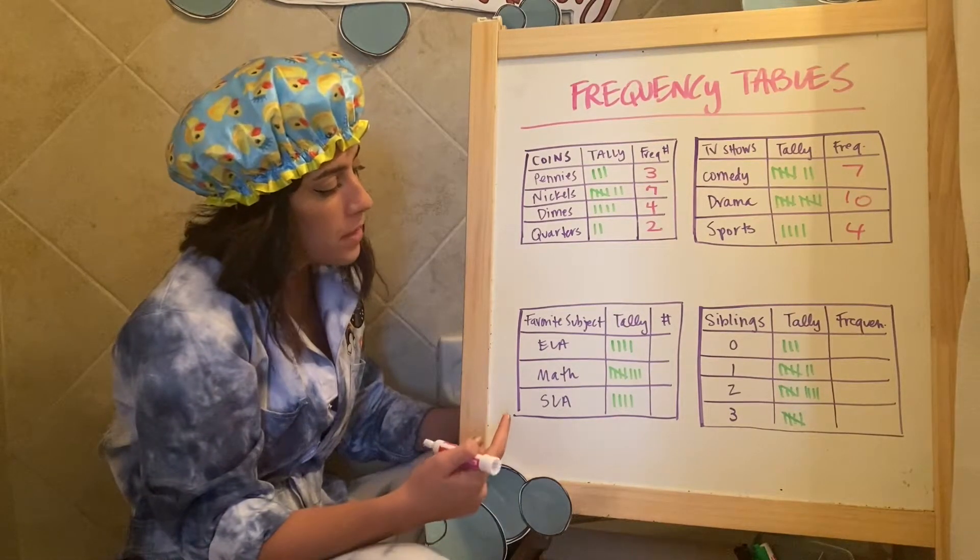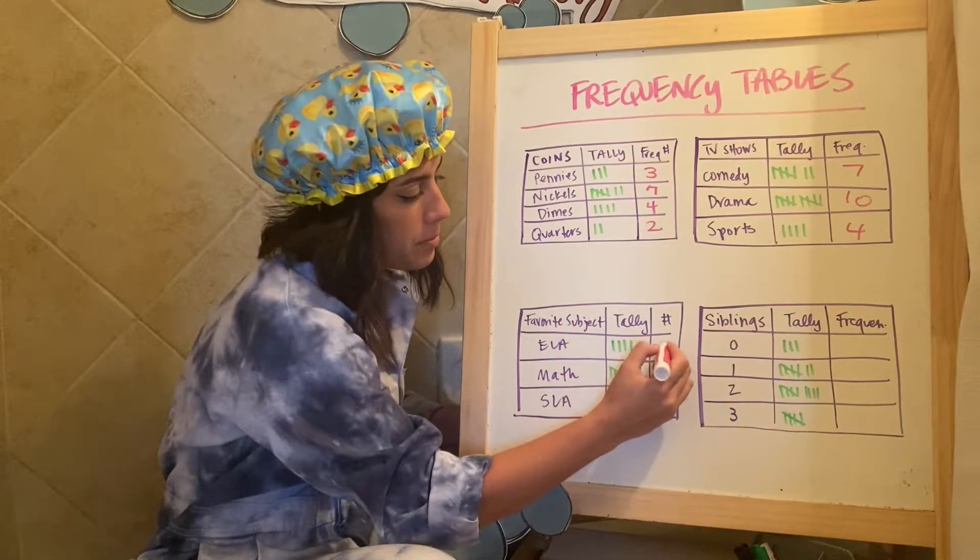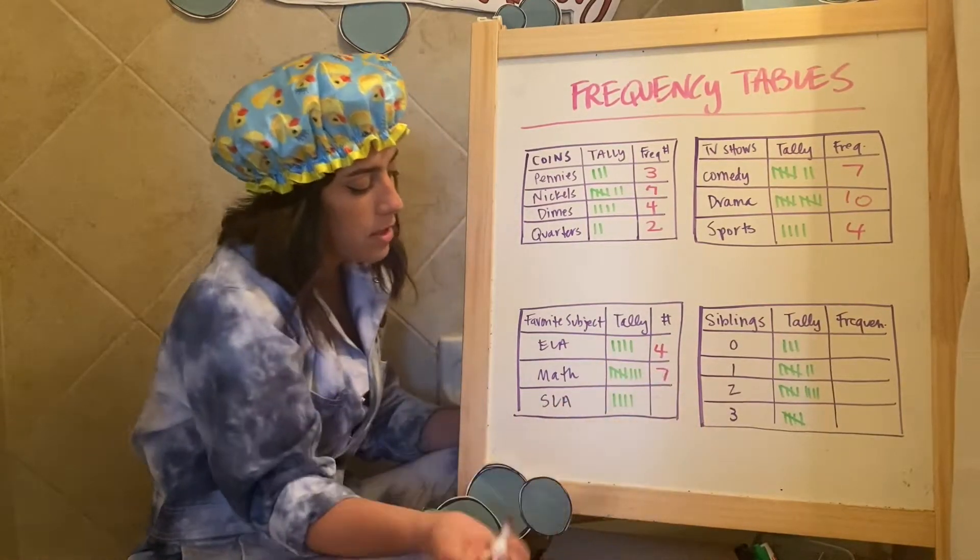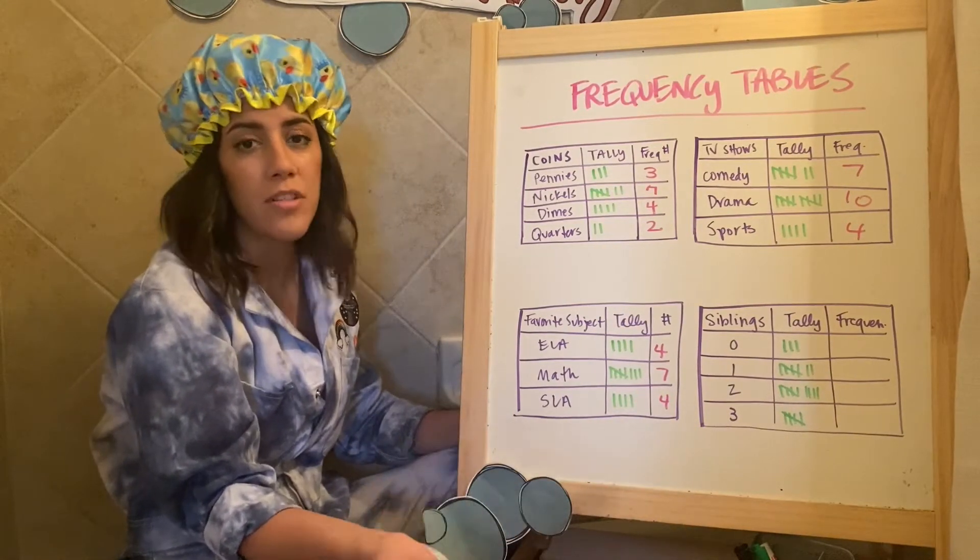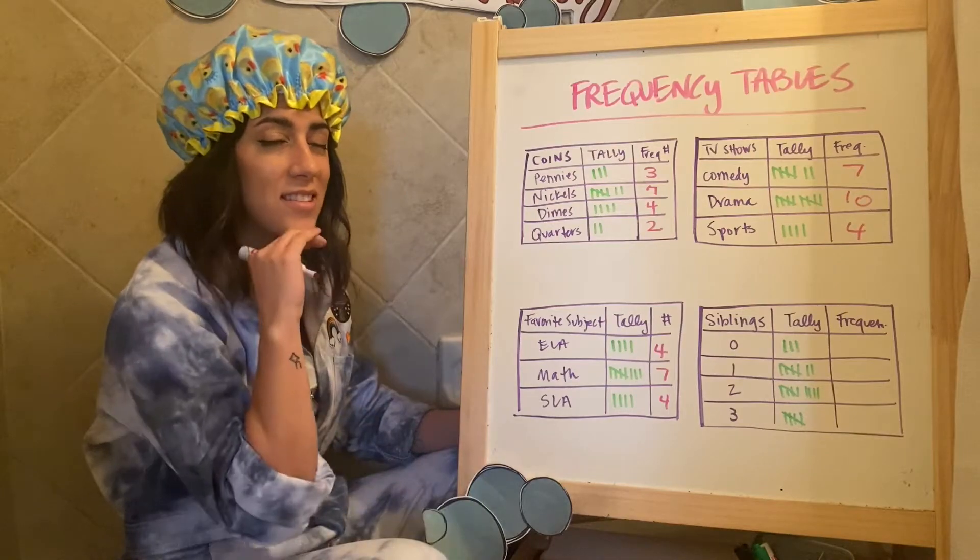But I'll give you two more examples. So favorite subject, ELA, four people said ELA, math, seven people said math, SLA, four people said SLA. Of course I put seven more on math because this is math.